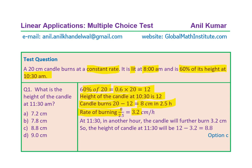Now we need to find the height at 11:30 a.m. That is one hour after 10:30, so in one hour it will burn another 3.2 centimeters. From the value of 12, we take away 3.2 and get our answer, which is 8.8 centimeters. Therefore, option C is the correct option for part A.